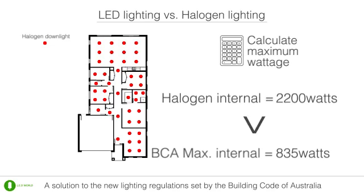Since 2,200 watts is greater than 835 watts, the example house does not meet the new BCA regulations. The best solution to this problem is to use LED downlights. For this house, LED downlights can be used in the exact same arrangement as halogen downlights.